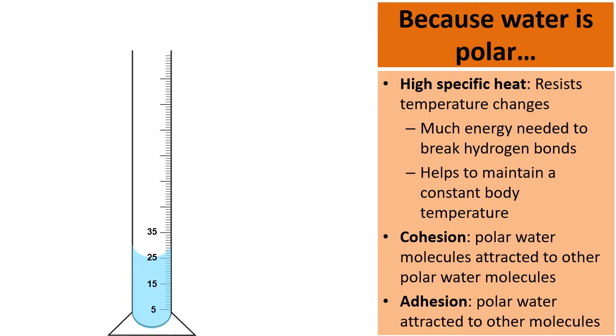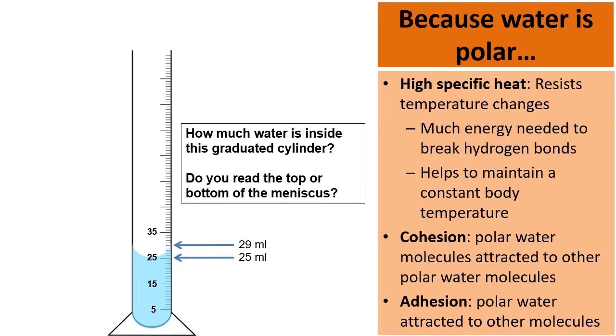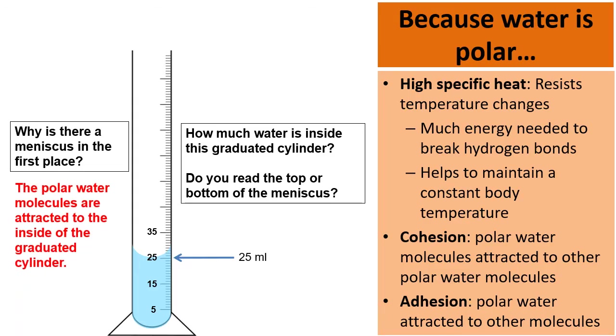So because water is polar it also has adhesion. And this is where polar water molecules are attracted to substances other than water. Here's a graduated cylinder filled with water. Notice the curvature right there. That's known as the meniscus when you add water into a graduated cylinder. Now the bottom of the meniscus might read 25 milliliters and the top might read let's say 29. Well, how much water is inside of this graduated cylinder? Do you read the top or the bottom? In order to be accurate you always read the bottom of the meniscus, 25 milliliters. But the point is why is there a meniscus in the first place? That's because water is polar and it's attracted to the inside of the graduated cylinder. Again, this is just another good example of how water has adhesion.